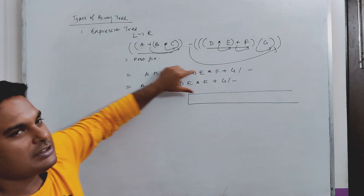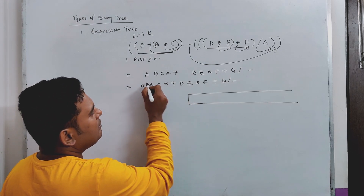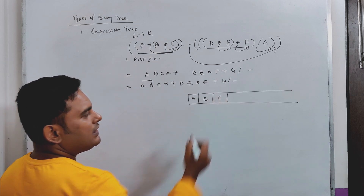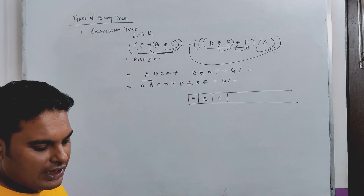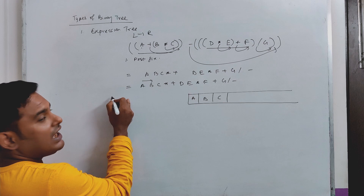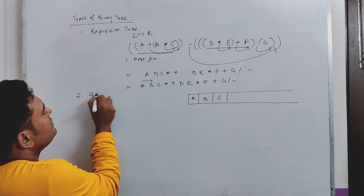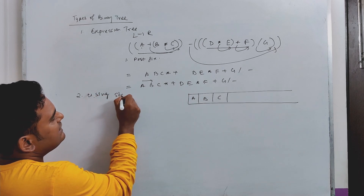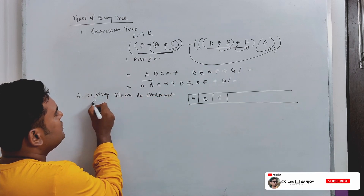Step 1: get the postfix expression and read it left to right. Step 2: use a stack — which is LIFO — to construct the expression tree.